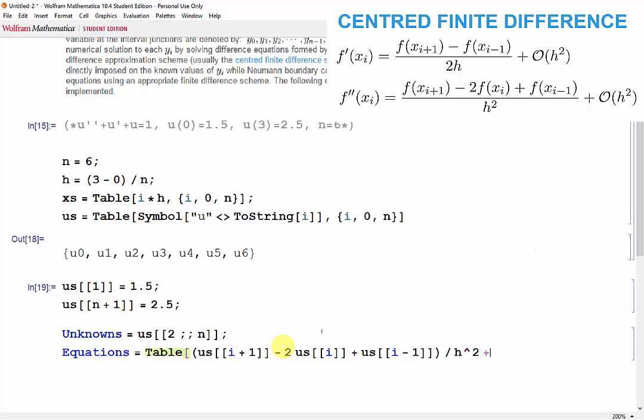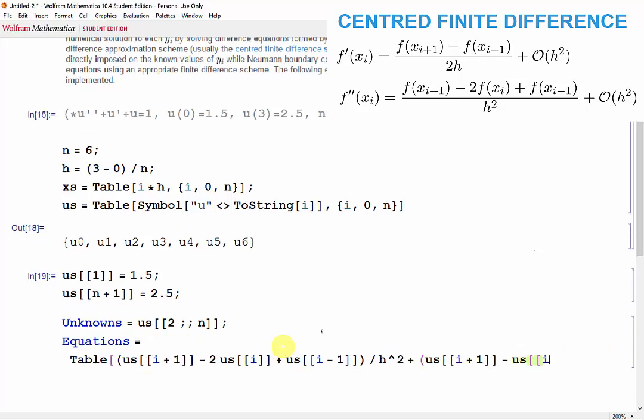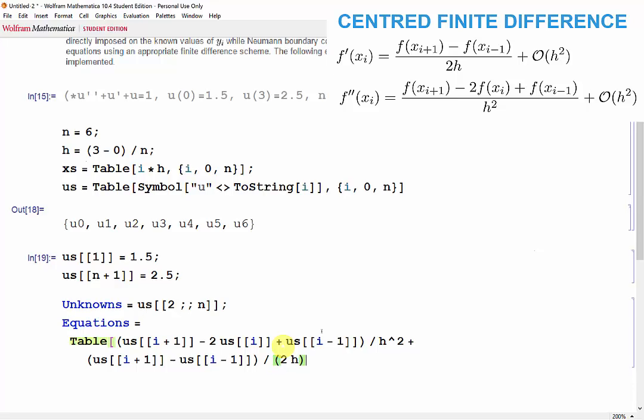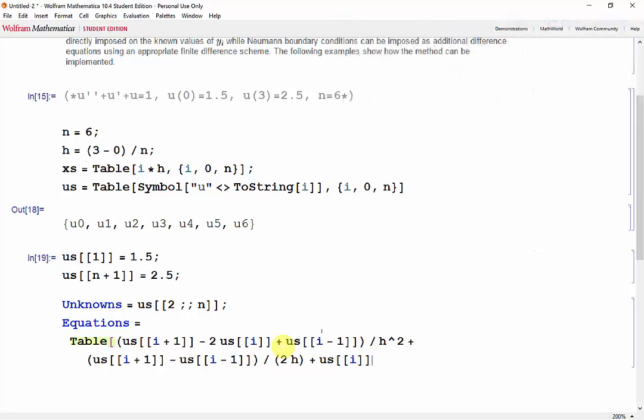And the centered finite difference formula for the first derivative is u s of i plus 1 minus u s of i minus 1, and that's divided by 2h. And finally, just u s of i, since all we have is u of x. And that's all set equal to 1.